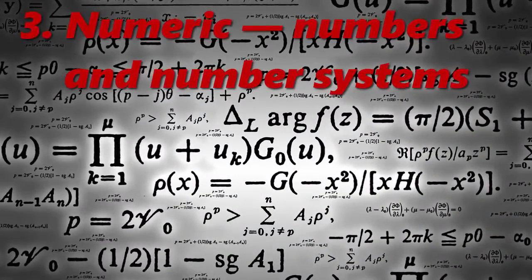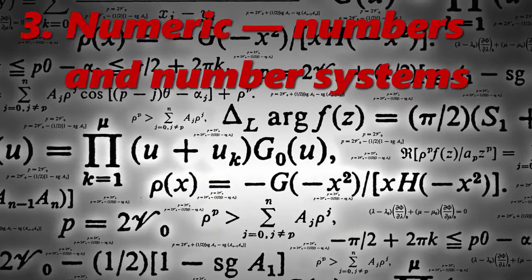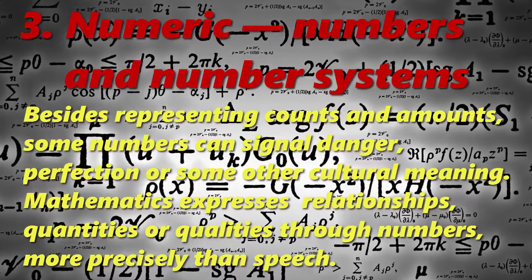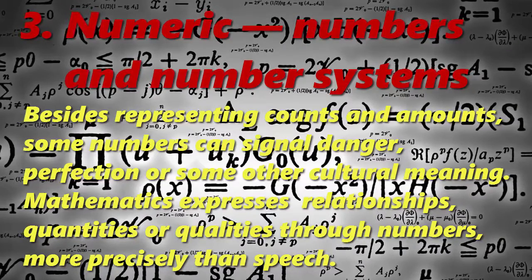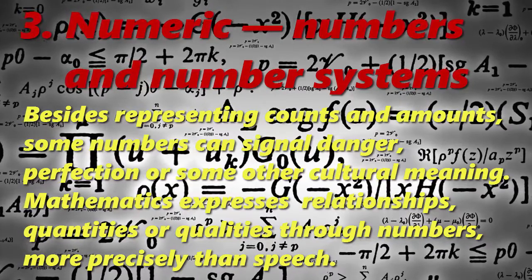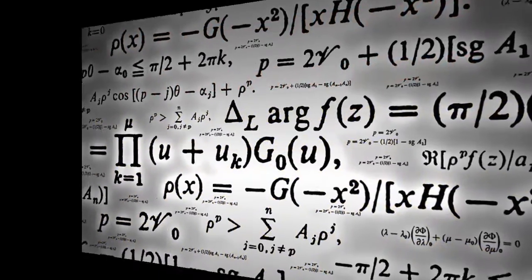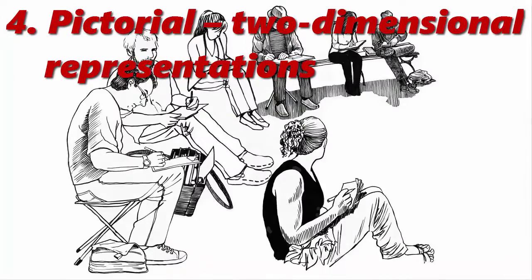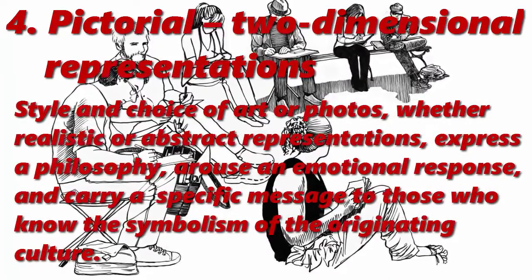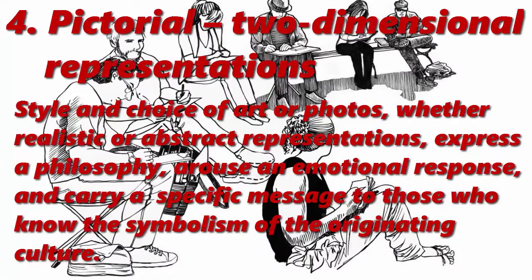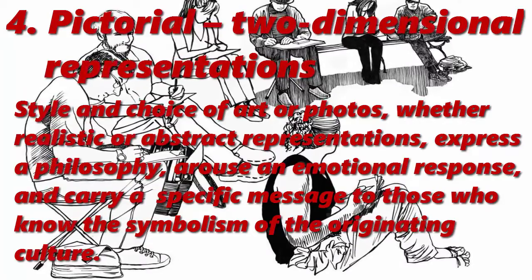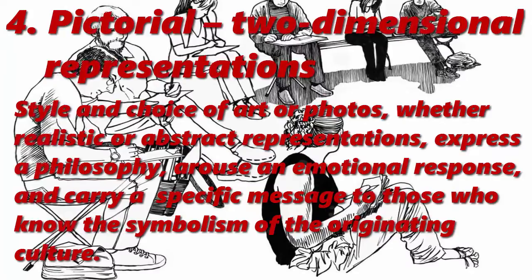3. Numeric, Numbers and Number Systems. Besides representing counts and amounts, some numbers can signal danger, perfection, or some other cultural meaning. Mathematics expresses relationships, quantities, or qualities through numbers, more precisely than speech. 4. Pictorial, Two-Dimensional Representations. Style and choice of art or photos, whether realistic or abstract representations, express a philosophy, arouse an emotional response, and carry a specific message to those who know the symbolism of the originating culture.